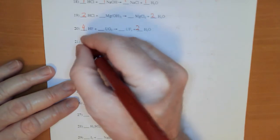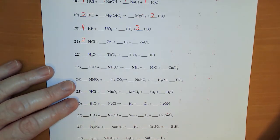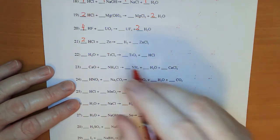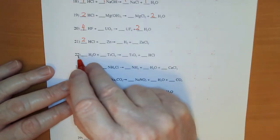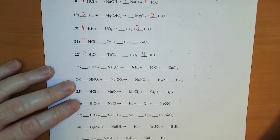Those 2s caught my attention, so I have to put a 2 there. And number 21 is done. In number 22: that 4 on the chlorine — put a 4 there, which means I have to put a 2 there. 2 oxygen, 2 oxygen, titanium, titanium, 4 chlorine, 4 chlorine, 4 hydrogen, 4 hydrogen. We're good.